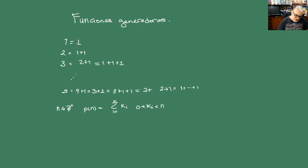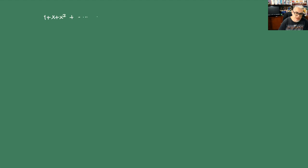Si lo expresamos como una función generadora, podemos hablar sobre series de potencias. Podemos escribirlo de la forma 1 más x más x² más... hasta x^n. Por ejemplo, si quisiéramos determinar alguna partición para el número 10, tendríamos que encontrar un coeficiente para x^10.